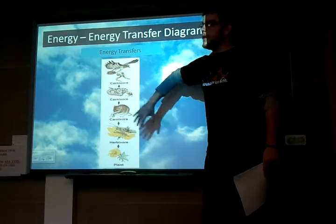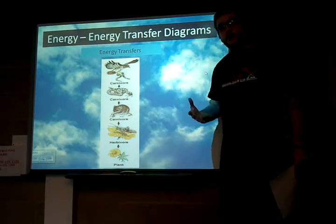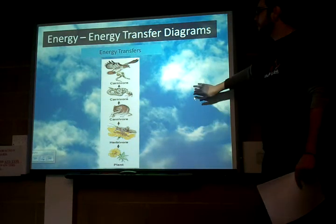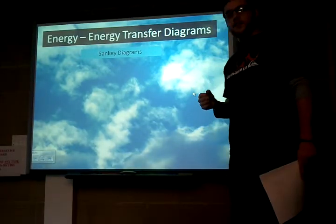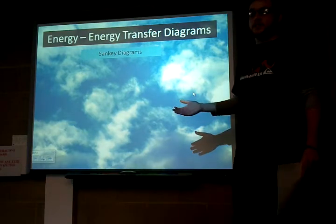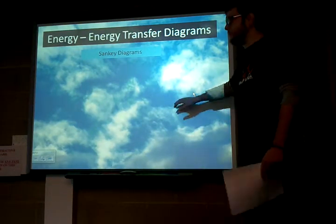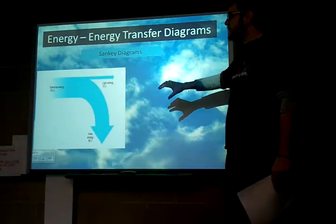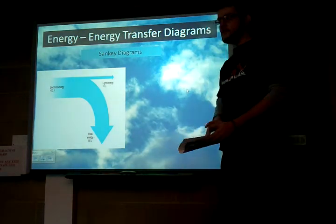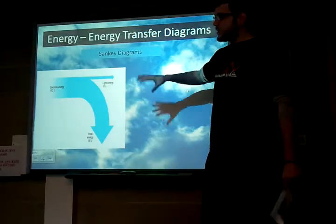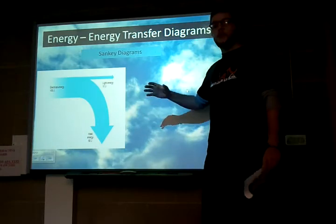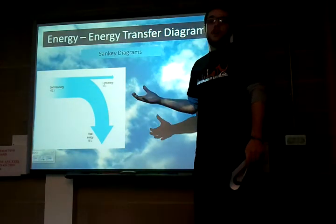There will always be some energy lost because individual animals use it for growth, for breathing, and for movement. There's another type of energy transfer diagram called Sankey diagrams — named after the person who created them. These diagrams are very different to the traditional energy transfer diagrams we've been looking at, but it's exactly the same principle. We're taking an energy source and we're trying to light a light bulb.